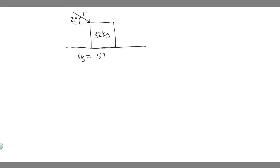In this problem, we're told to move a large crate across a rough floor. You push on it with a force F at an angle of 21 degrees below the horizontal, as shown in this figure. Find the force necessary to start the crate moving, given that the mass of the crate is 32 kilograms, and the coefficient of static friction between the crate and the floor is 0.57.